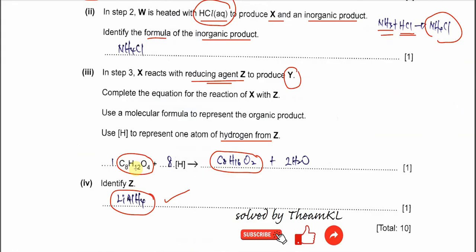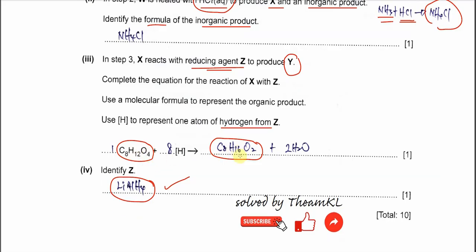Hydrogen must add four. So 12 plus 4 becomes 16. Oxygen must remove two. So now it becomes O2. So the molecular formula for the products now is C8H16O2. And of course it will form the H2O because the oxygens removed here will combine with the hydrogens from reducing agent to form H2O. So you just balance it. Okay, put two H2O and here you just put eight hydrogen. So the equation is balanced.